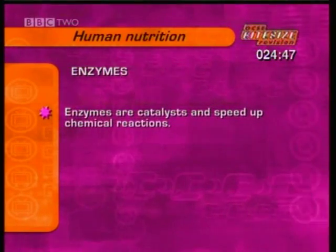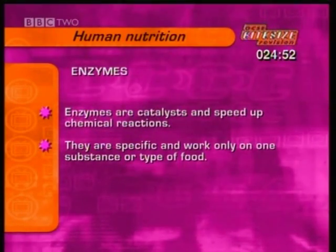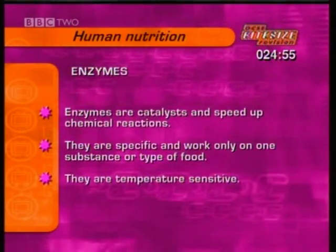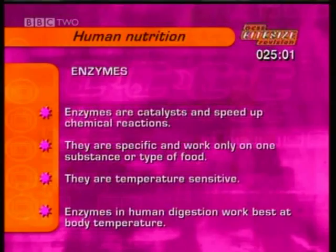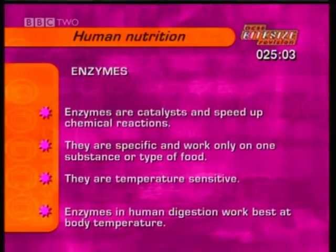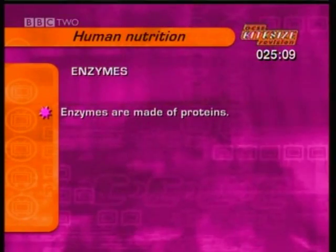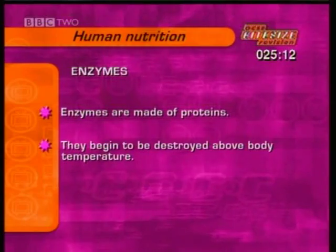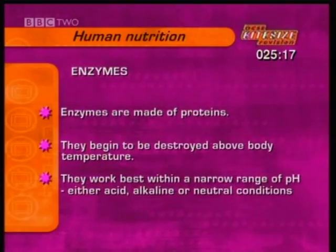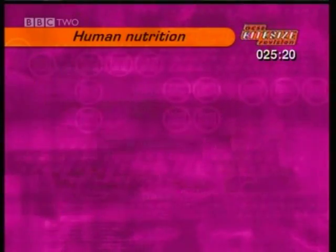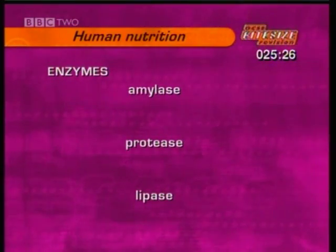All enzymes are catalysts and speed up chemical reactions. They're specific, which means they work only on one substance or type of food. They're temperature sensitive and work best within a narrow range of temperatures. Enzymes involved in human digestion work best at body temperature, around 37 degrees Celsius. They are made of proteins and begin to be destroyed at temperatures much above body temperature. They work best within a narrow range of pH — that is, in either acid, alkaline or neutral conditions. The three types of enzymes involved in human digestion are amylase, protease and lipase.